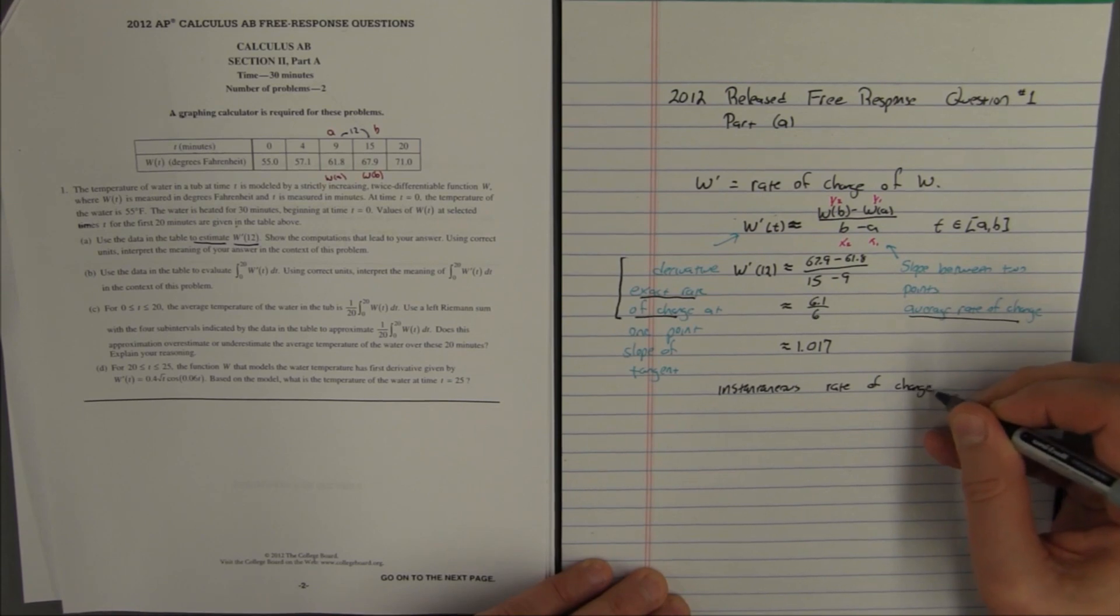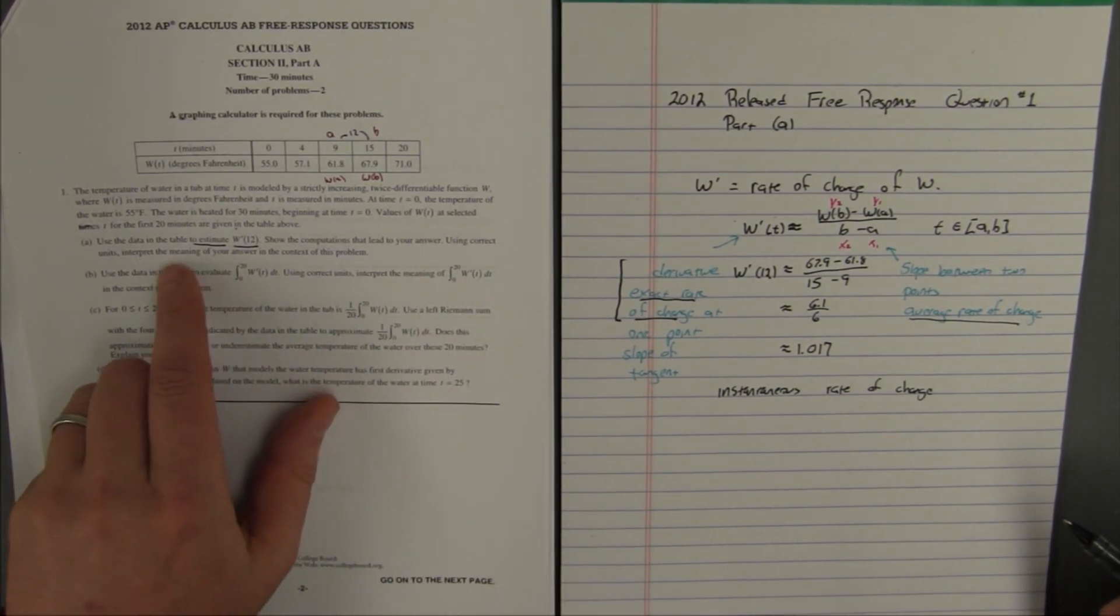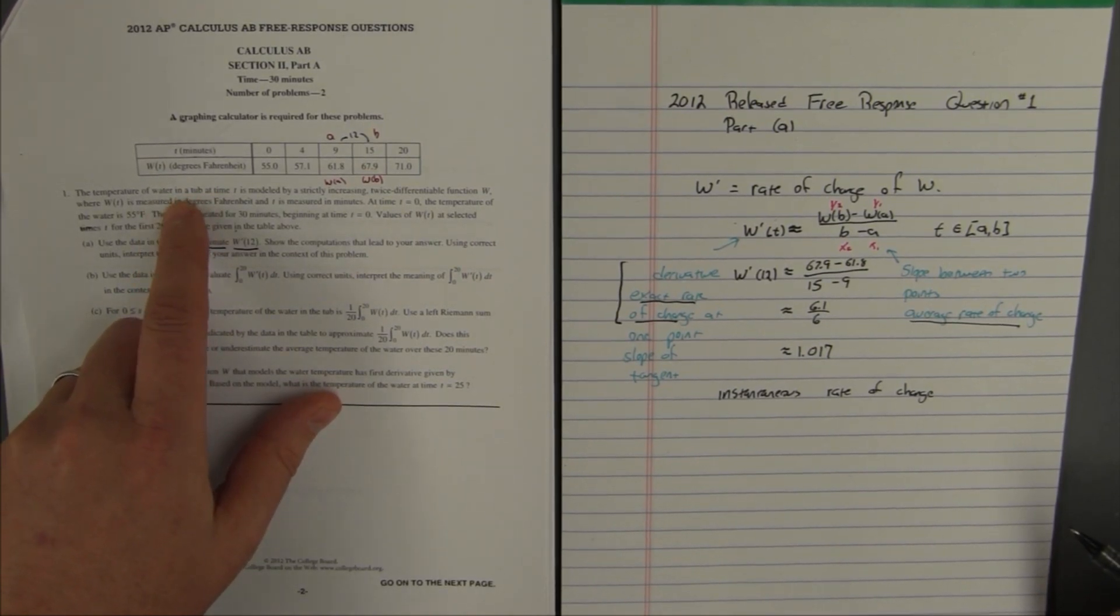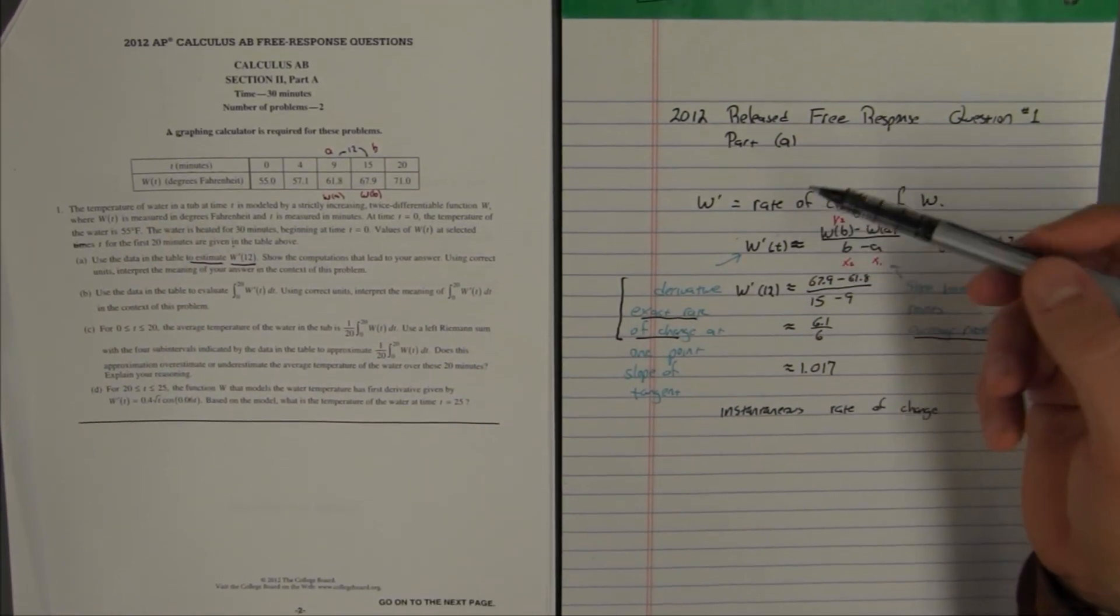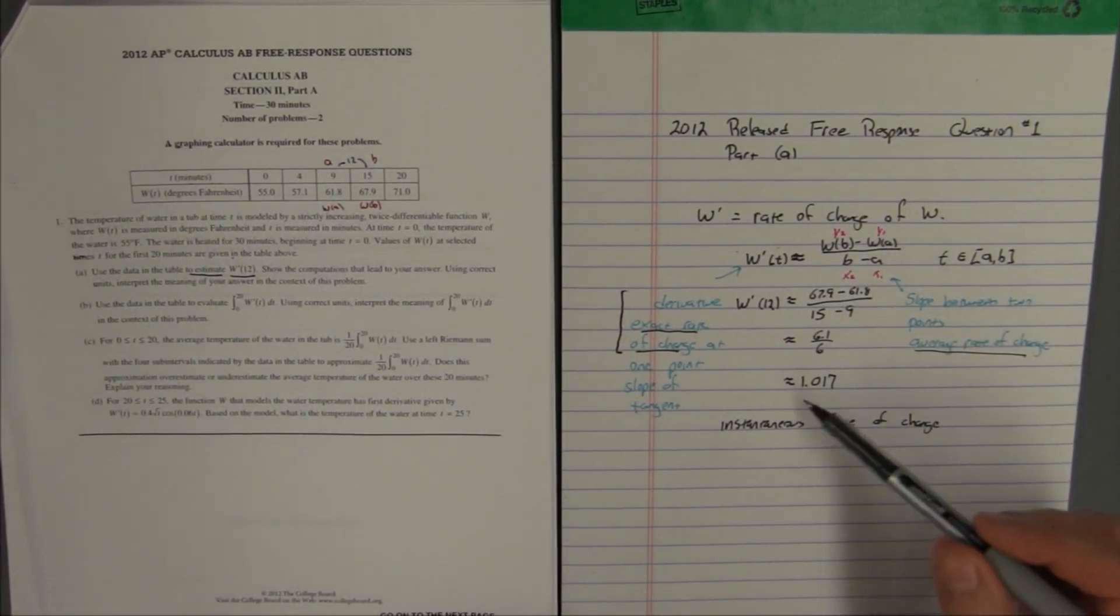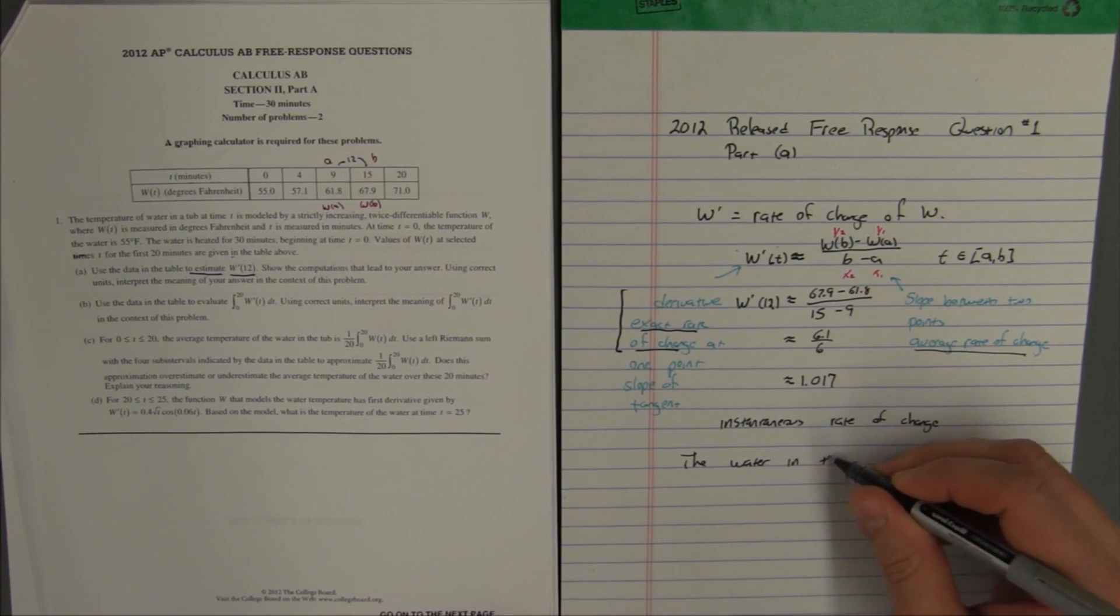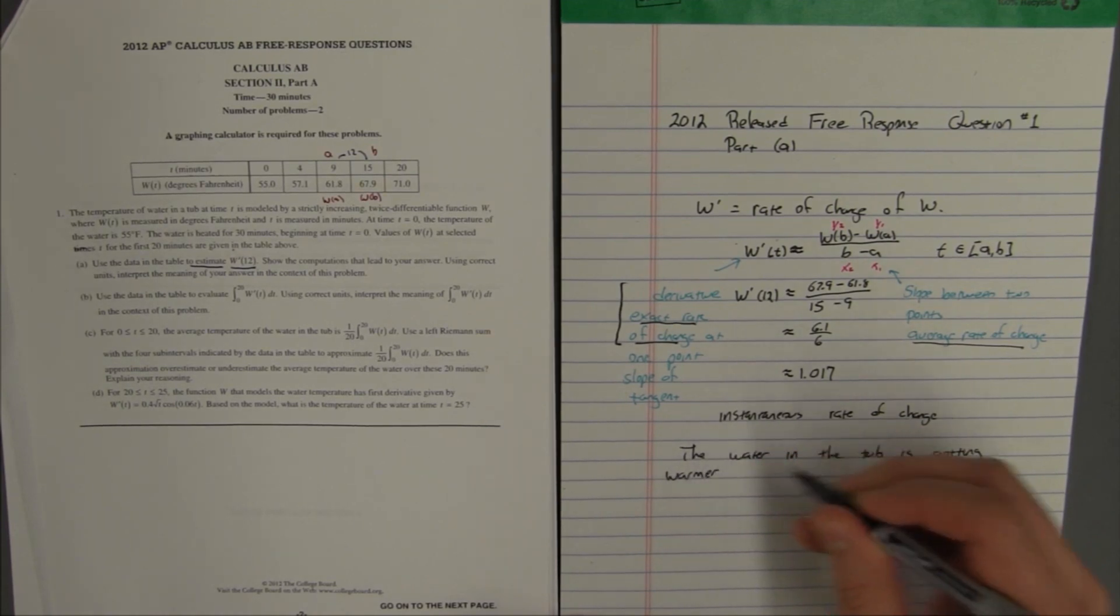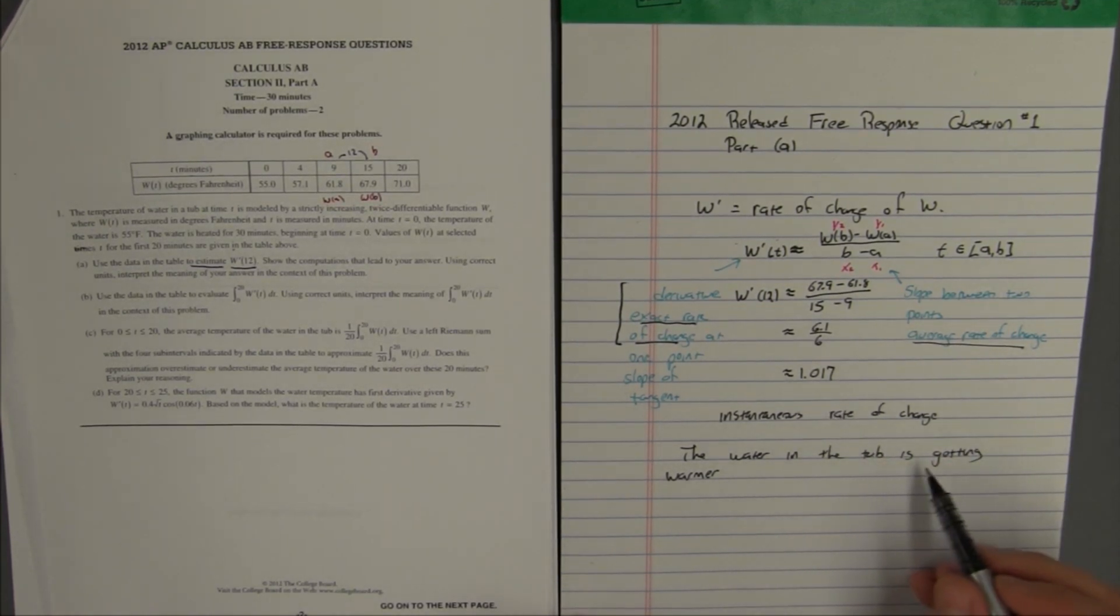So the derivative is an instantaneous rate of change. And I want to notice things like the rate of change is positive. That means that the water is getting warmer. So when we write this sentence where we're going to interpret the meaning, we need to go back to the tub, and we need to say we're talking about water in a tub, and we need to say what is this 1.017, what is it saying about the water in the tub? W is the temperature of the water in the tub, w prime is the rate of change of that temperature. So what this instantaneous rate of change means is the water in the tub is getting warmer. If the rate of change turned out to be negative, I would say that the water in the tub is getting cooler. Since it's positive, I'm going to say the water in the tub is getting warmer.